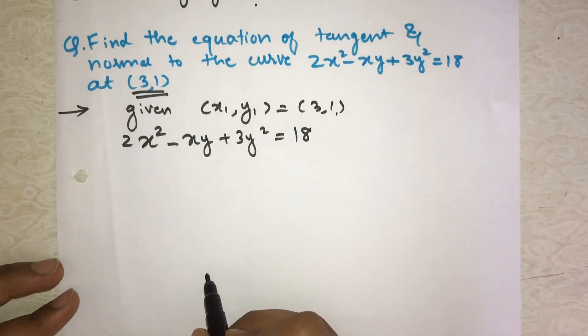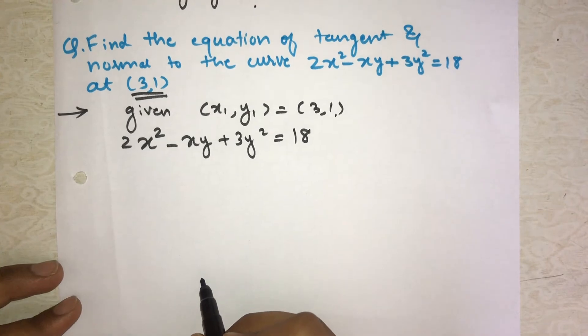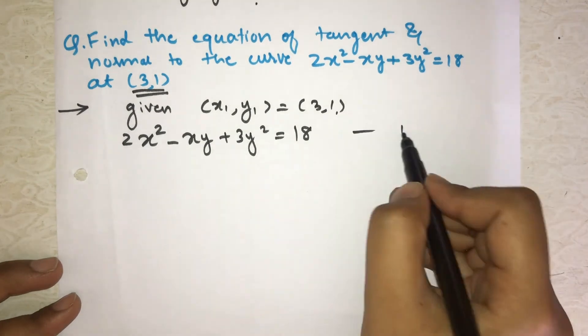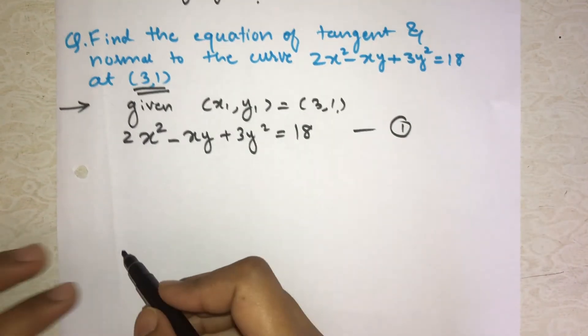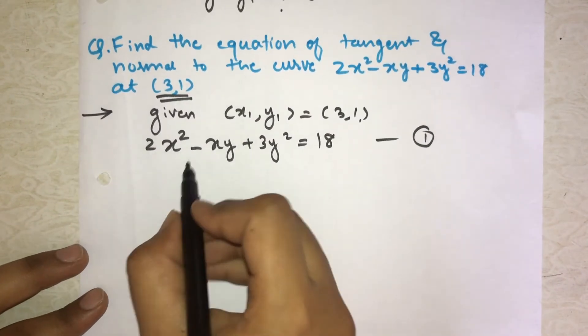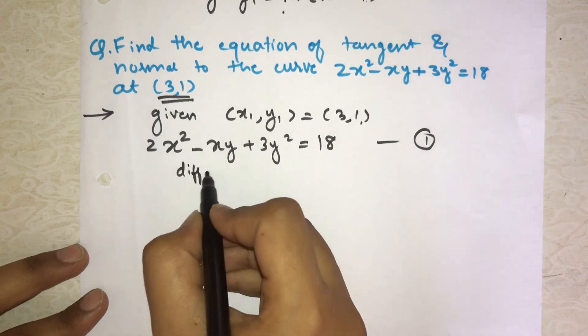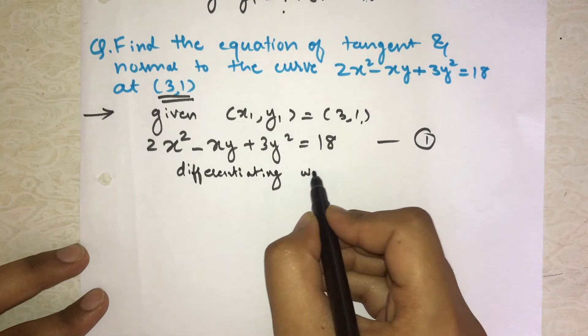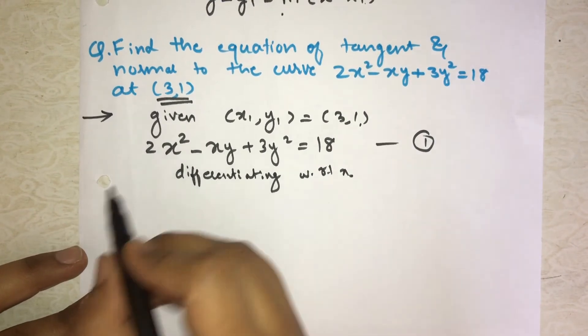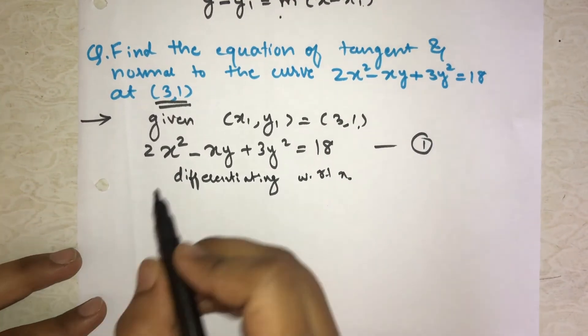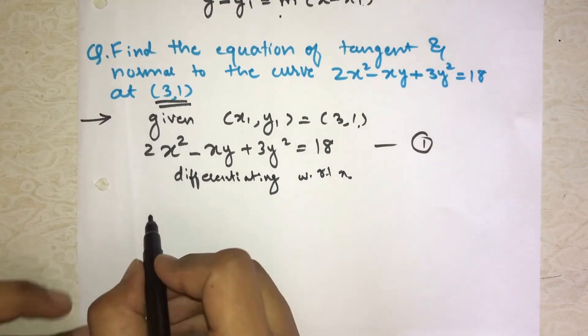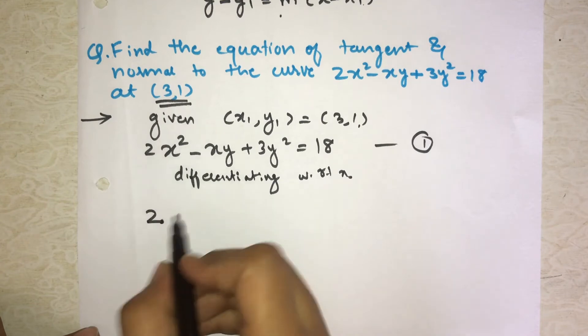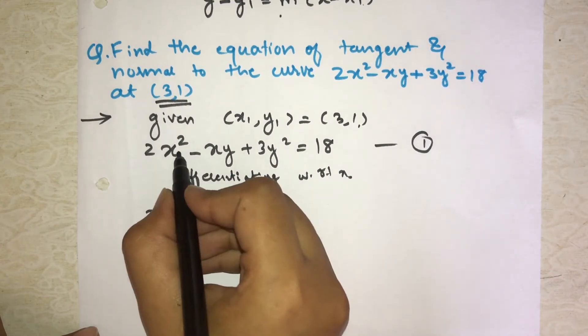Then the curve is given, so we write the curve: 2x² - xy + 3y² = 18. Now what is first step? We have to find slope m which equals the derivative of this curve. So let's take the derivative, differentiating with respect to x.